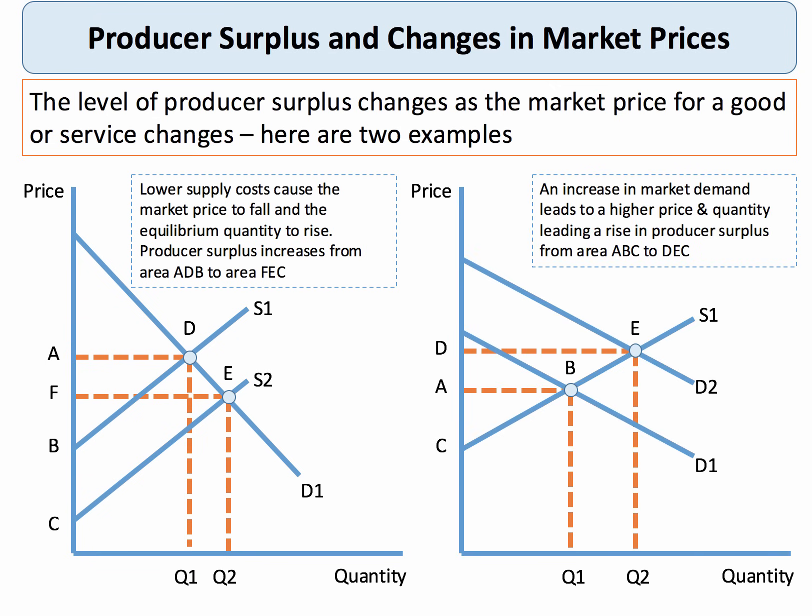What happens to the producer if demand increases? On the right-hand side we show the effect of an outward shift of the demand curve. The equilibrium point changes from B to E. So the producer, having originally sold quantity Q1 at price A, can now sell output Q2 at price D. Producer surplus increases from area ABC to a bigger area, DEC. Producers gain in terms of higher producer surplus if supply costs fall, or if the demand curve shifts out to the right.